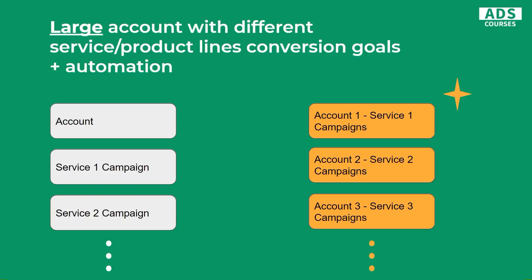Now let's talk about situations when you have a large account with different services or product lines, different conversion goals, and you use automation. Until recently, I would suggest having different accounts for every service with different conversion goals so automated systems could optimize correctly. But from June 2019, you have the ability to pick a conversion goal at the campaign level. So you can have one account with different campaigns for different conversions and select on a campaign level which conversions each campaign should focus on. That's a huge game changer.